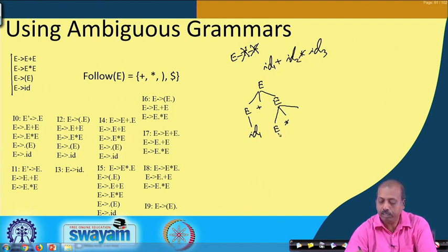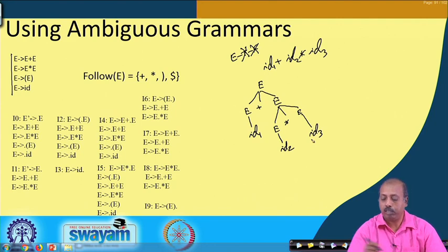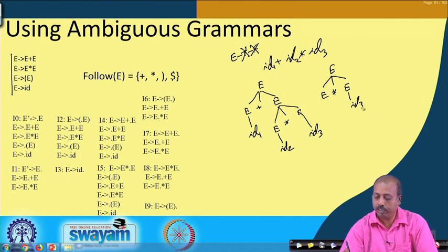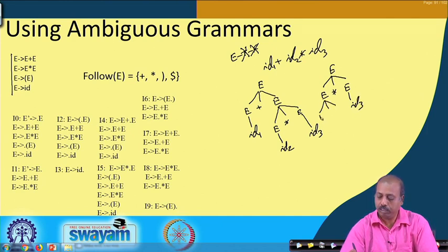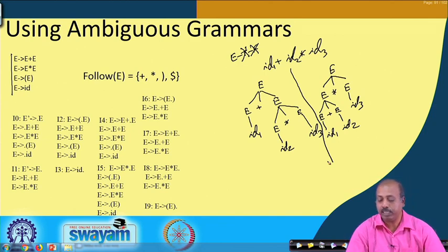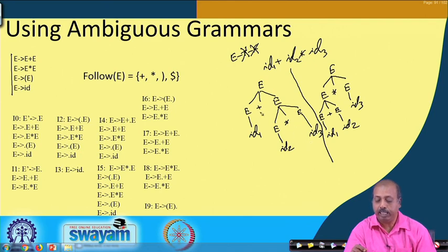Marking them ID1, ID2, ID3: in the first tree, ID1 is the left operand of plus, and E star E gives ID2 and ID3. Alternatively, E gives E star E where the right E is ID3, and the left E gives E plus E with ID1 and ID2. In one case, multiplication is done first between ID2 and ID3, then added to ID1.